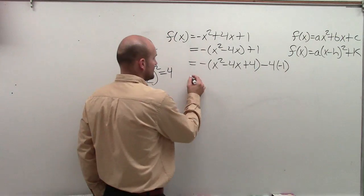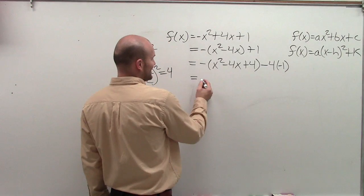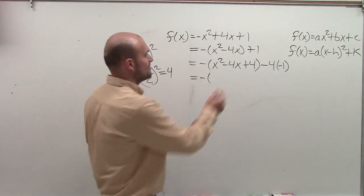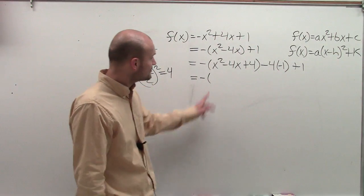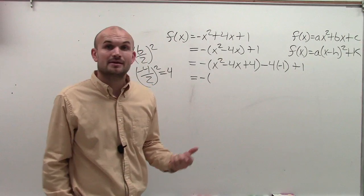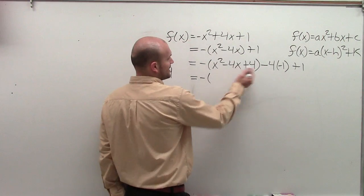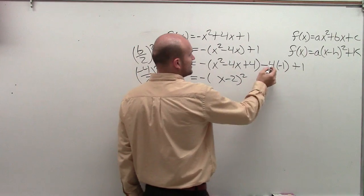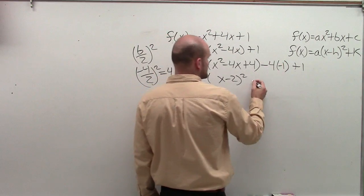All right, so then now I have negative and I can complete this, and then plus 1 at the end, right? Don't want to forget that. So now I need to write this as my perfect square binomial. So I can rewrite this and look at it and it says, all right, that's x minus 2 squared. Negative 4 times negative 1 is a positive 4. Positive 4 plus 1 is 5.